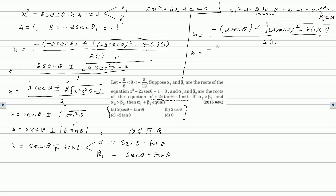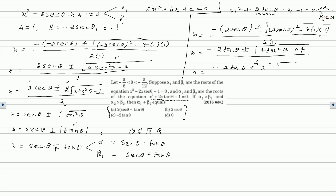Simplifying: x equals minus 2·tanθ plus or minus square root of 4·tan²θ plus 4, divided by 2. Taking 4 common under the square root gives 2, so x equals minus 2·tanθ plus or minus 2·√(tan²θ plus 1), divided by 2. This simplifies to x equals minus tanθ plus or minus √(tan²θ plus 1), which equals minus tanθ plus or minus secθ.